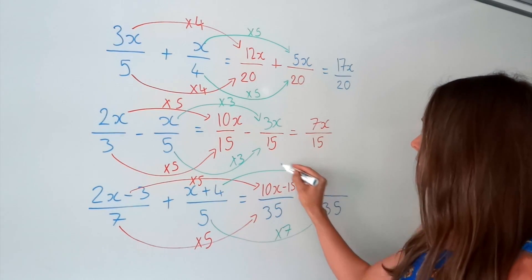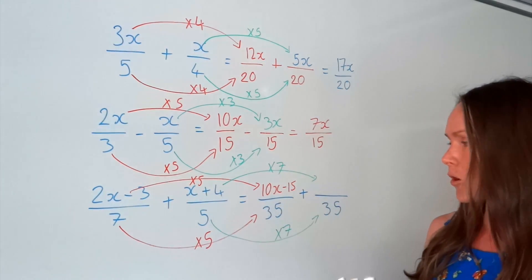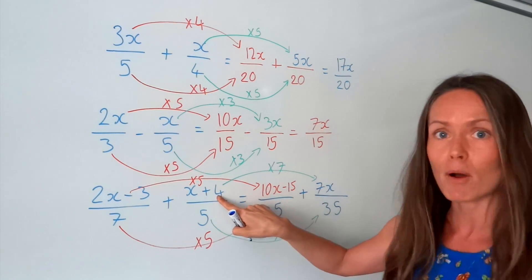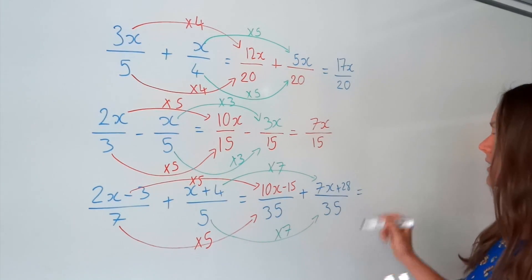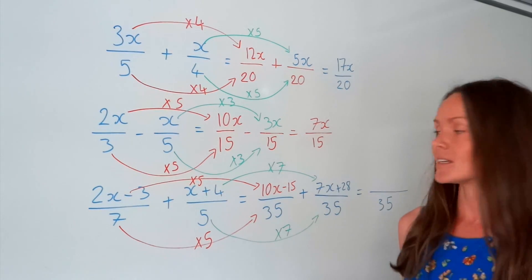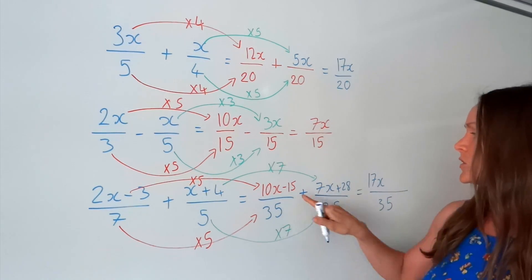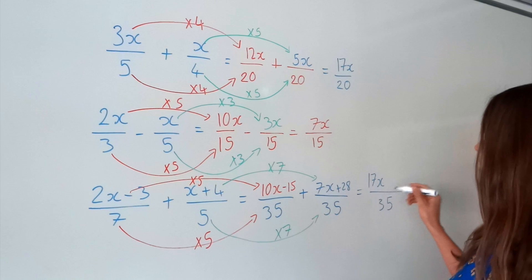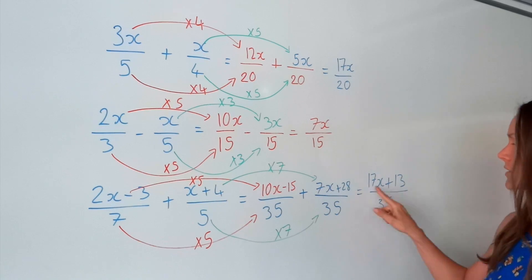So I do the same thing with the numerator — watch out because there are two terms here that I have to multiply by 7. So we've got x multiplied by 7, which is 7x. And we've got 4 multiplied by 7, which is positive 28. Now we can add them together. The denominator stays the same. So 10x plus 7x gives me 17x. And the numbers — be careful because this one's negative — we've got negative 15 plus 28, which gives me 13. This one doesn't simplify because there isn't a common factor within these numbers.